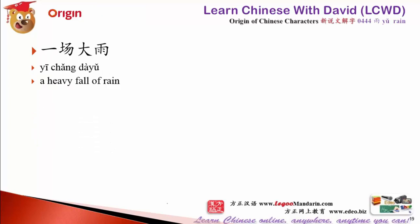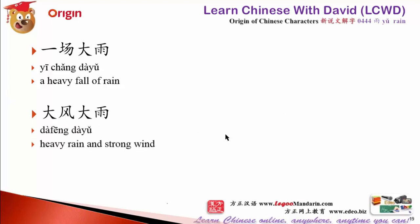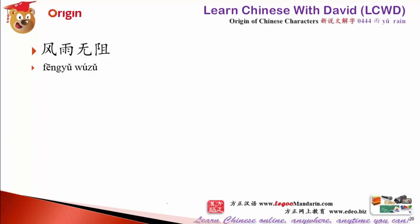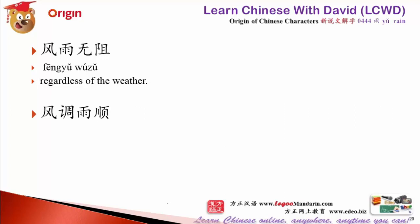一场大雨 means a heavy fall of rain. 大风大雨 means heavy wind and heavy rain, but it also means storms in your life — troubles you face. 她经历了很多大风大雨 — she has been through a lot of hardship. 风雨无阻 means rain or shine, nothing stops you — you go to work or study every day no matter the weather.